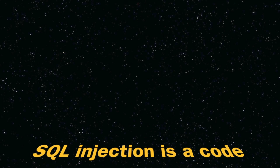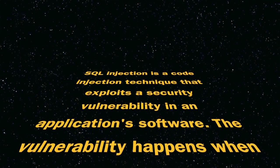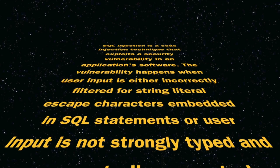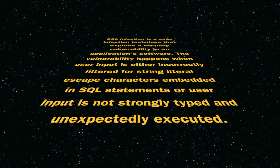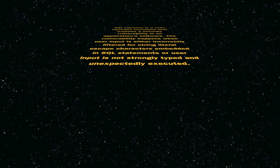You might be wondering to yourself, what is this sorcery, and trying to figure out how that works. We might turn to something like Wikipedia, which describes SQL injection as a code injection technique that exploits a security vulnerability in an application software. The vulnerability happens when user input is either incorrectly filtered for string literal escape characters embedded in SQL statements, or user input is not strongly typed and unexpectedly executed — which frankly is a stupid definition because to me it makes no sense whatsoever.